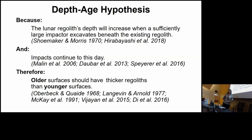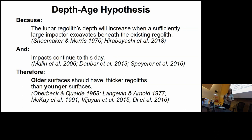Regarding impacts continuing to the present day, Malin in 2006 used the Mars Orbiter Camera to show new impacts forming today. Daubar in 2013, and in a new 2022 paper, found thousands of new impacts on Mars. Spire in 2016 has a paper about new impacts on the moon, with additional papers from the LRO team. This conclusion has been put forth from the 1960s up to the present day.